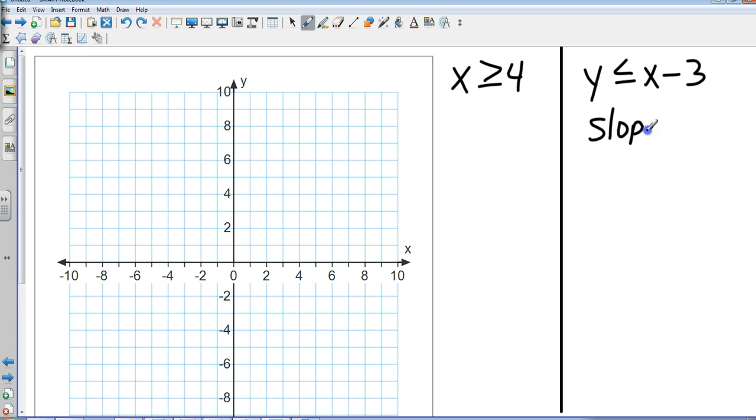You notice the second one is in y equals MX plus B form, so let's go ahead and write down the slope and the y-intercept. The slope of this one is one and the y-intercept is negative three. So let's go ahead and graph this. Y-intercept negative three is going to be right there, and my slope is one over one, which means up one over one.